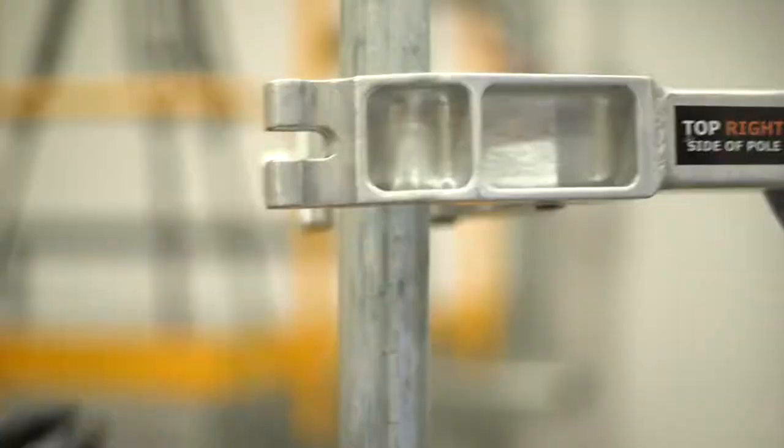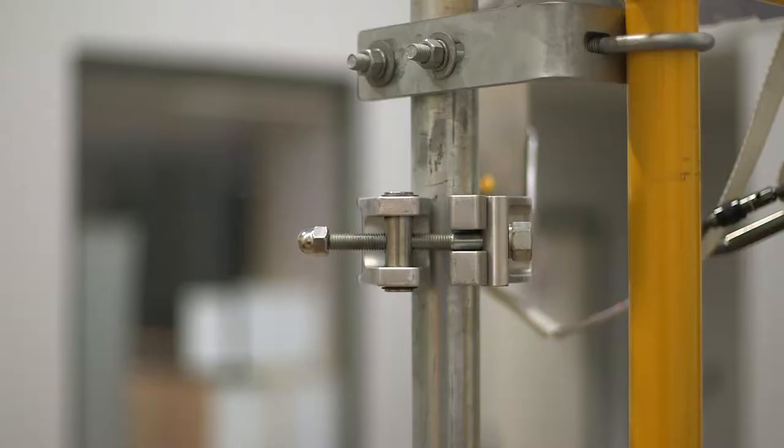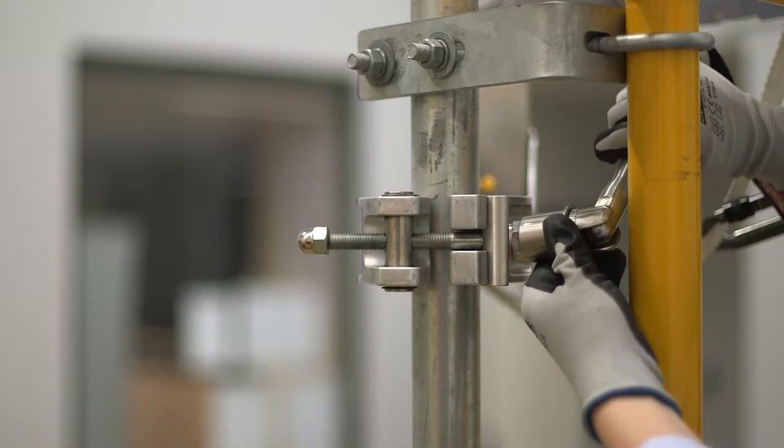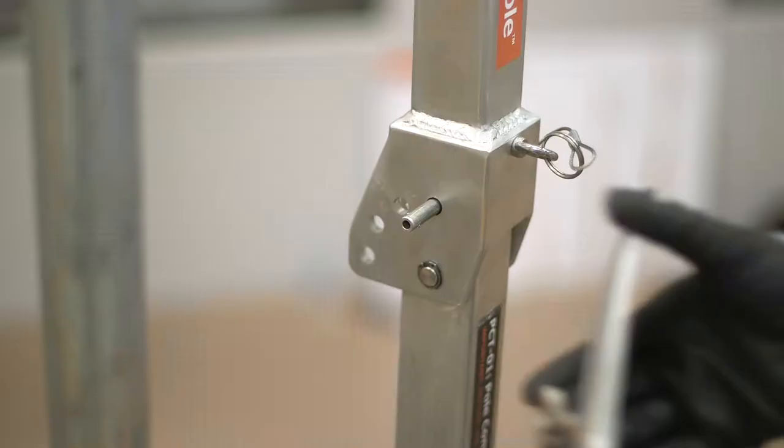Align top edge of pole conversion tool upper clamp with top mark on the pole. Lock pole conversion tool clamps in place, ensuring half-moon locators are seated correctly into the clamps. Tighten clamp bolts firmly.